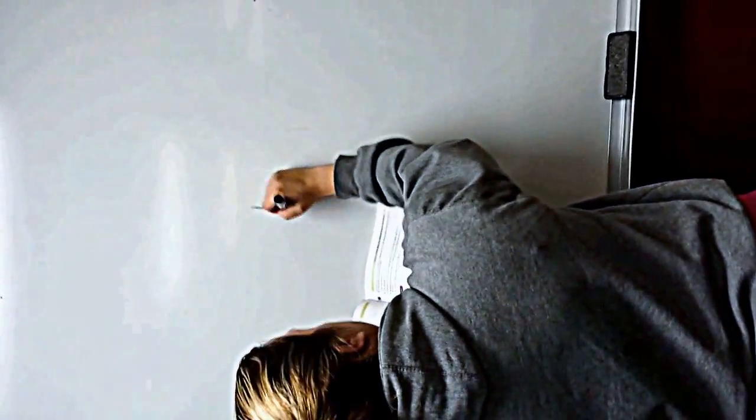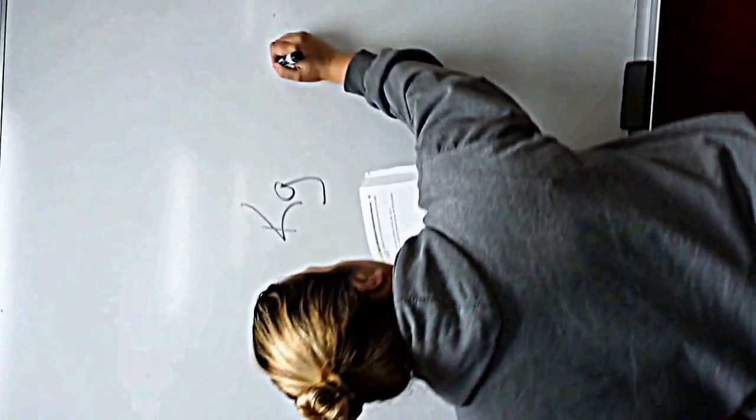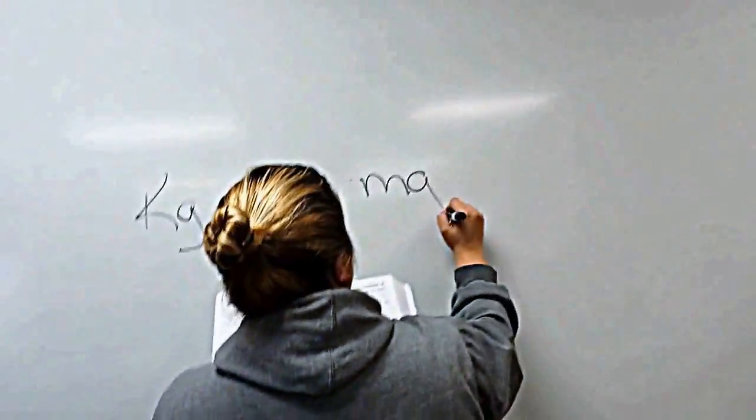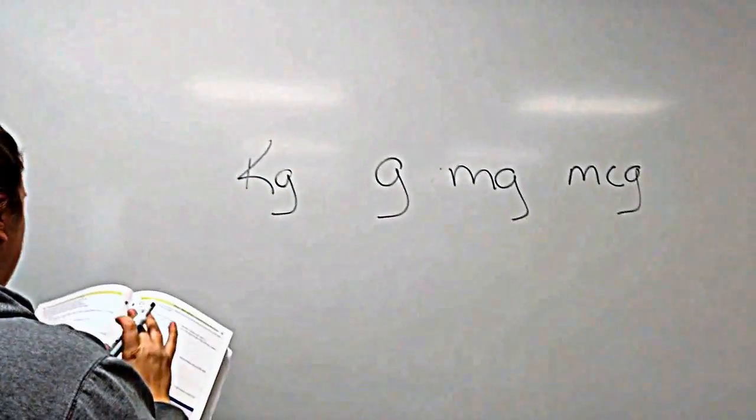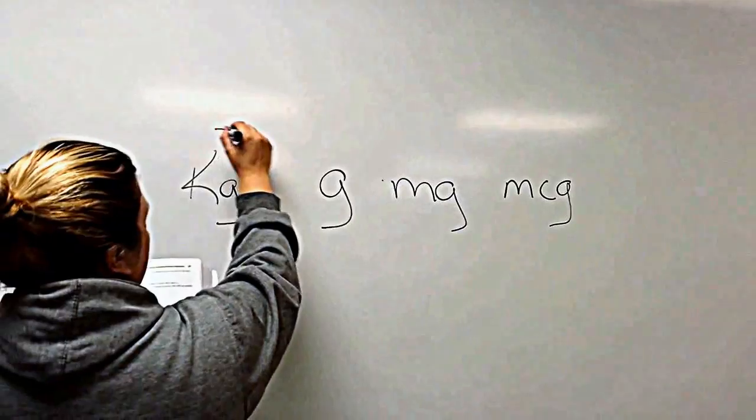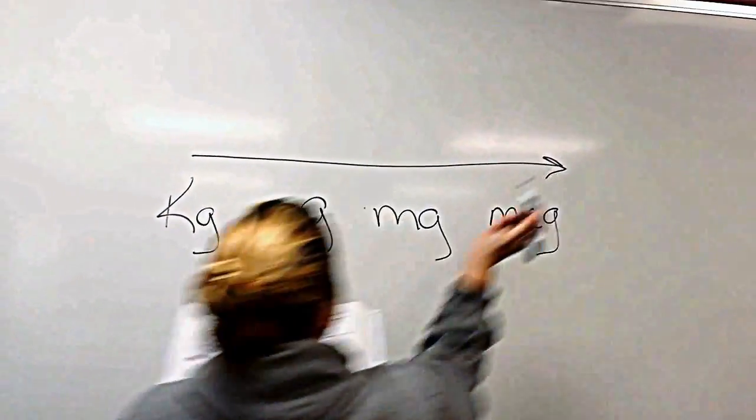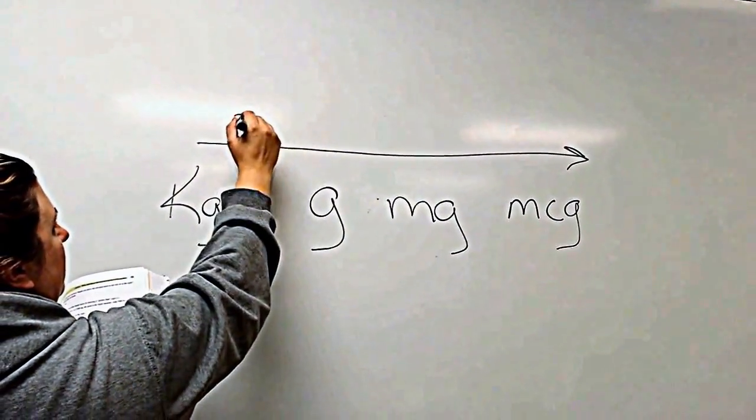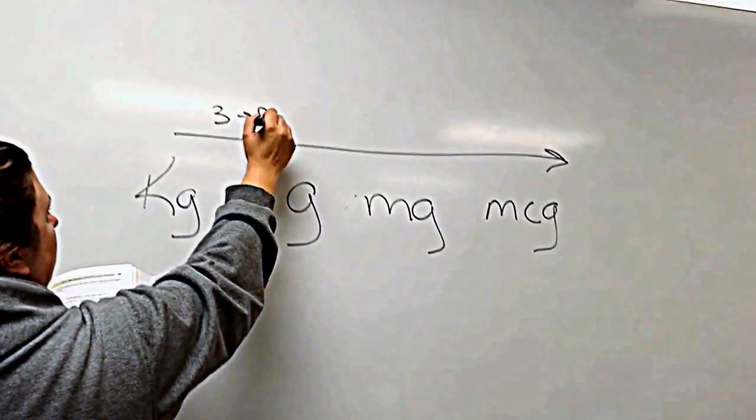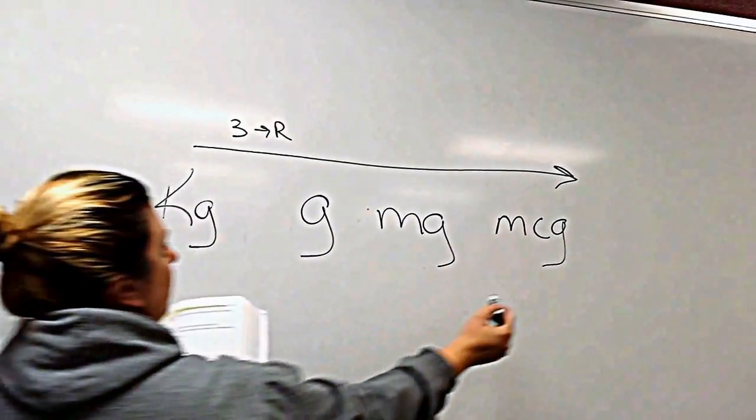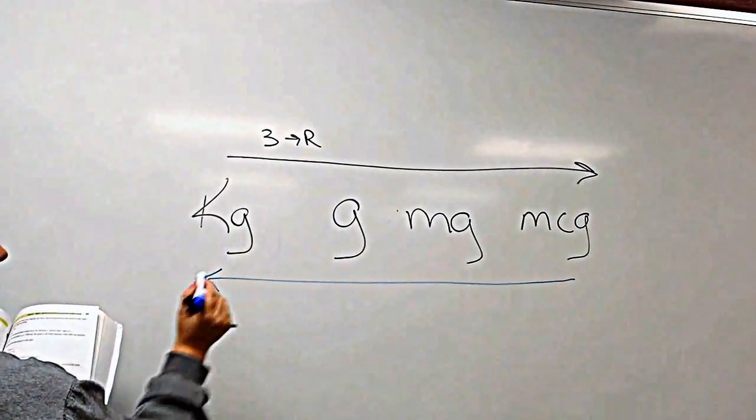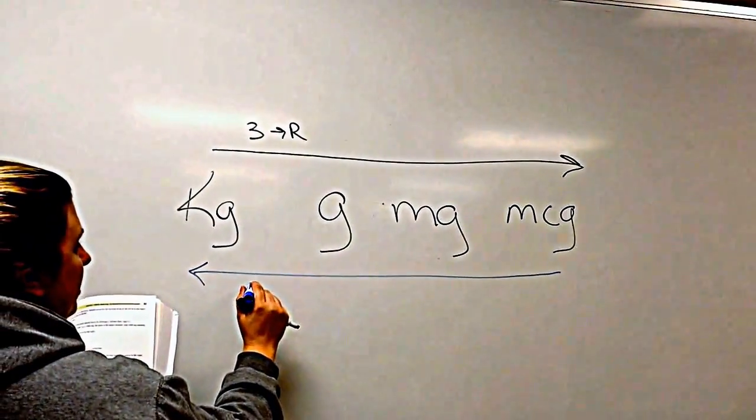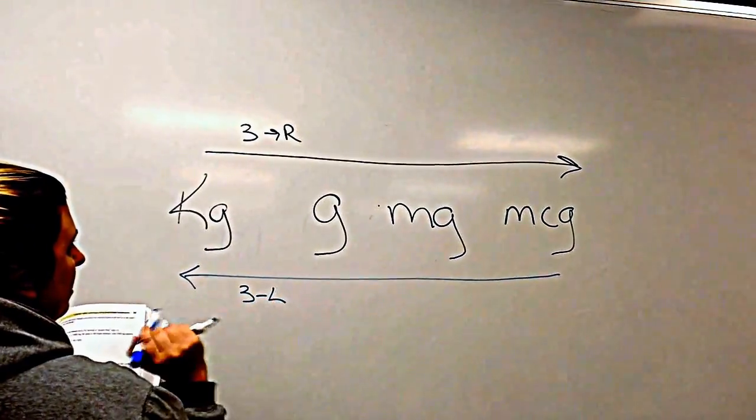So we're doing the kilogram, gram, milligram, and microgram. When you go large to small, which is this way, you move the decimal point 3 to the right. When you're going from small to large, you're going to move the decimal point 3 to the left.